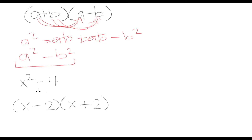We can easily factor a difference of two squares by taking the square root of each of the terms and first adding them and then subtracting them — just two brackets, one with a minus sign and one with a plus sign. That is a very simple way to factor these types of expressions.